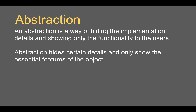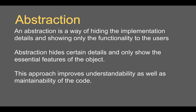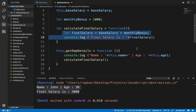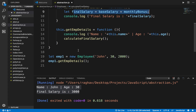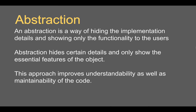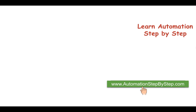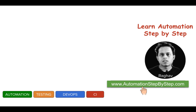This is an example of abstraction — we hide the details that are not required and only expose what the user needs. It also helps in maintaining the code: if the monthly bonus or salary calculation logic changes, I just update it internally and the user still calls getEmployeeDetails and gets the output. I suggest looking at more examples and doing hands-on practice. Thank you for watching.